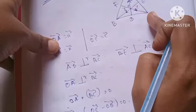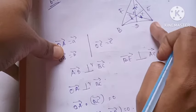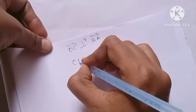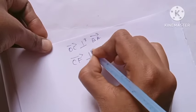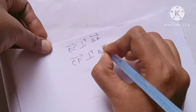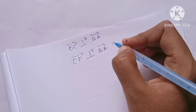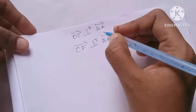So OC is perpendicular to AB vector. CF vector is perpendicular to BA vector. Therefore, the altitude CF passes through O.